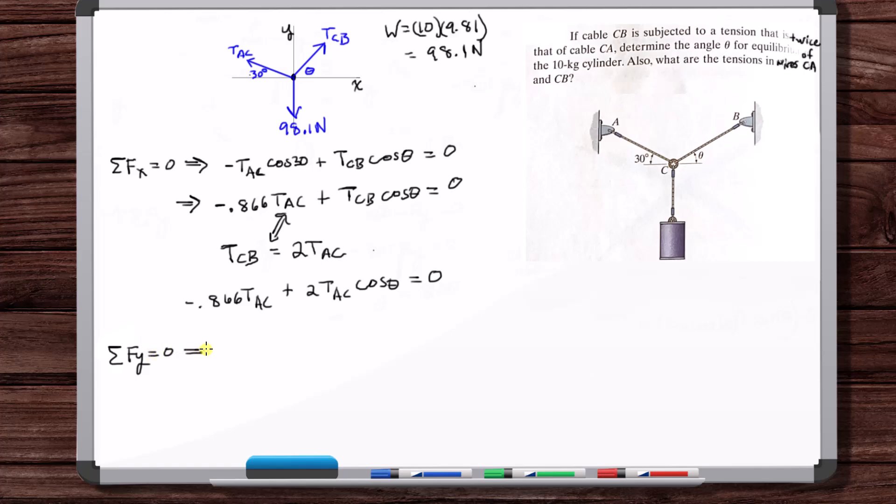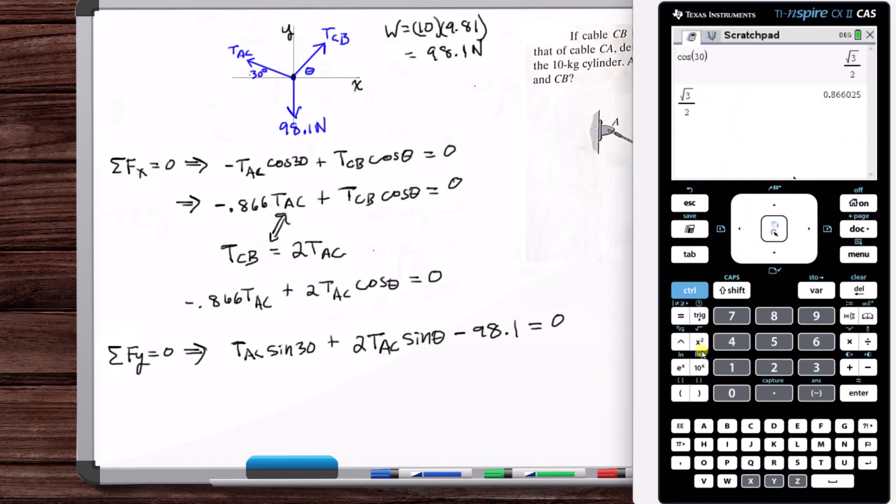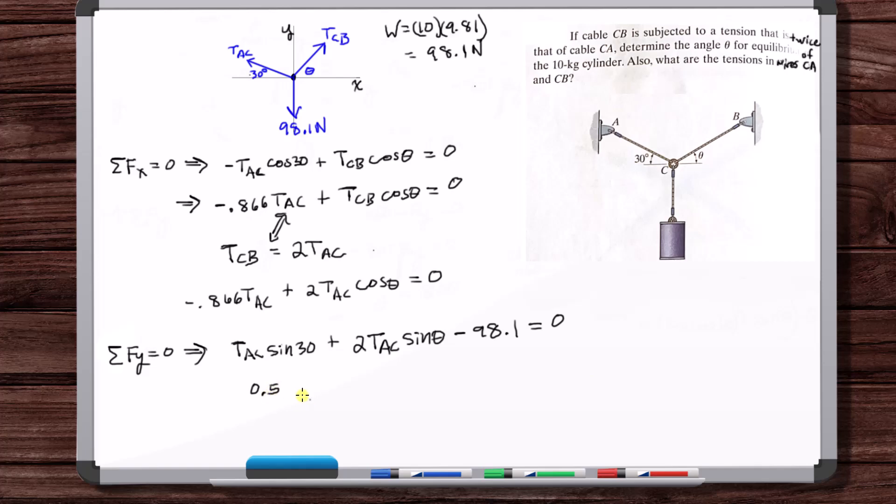Sum of forces in the y must equal zero. So T_AC sine 30 plus T_CB sine theta, but T_CB is 2 T_AC, so 2 T_AC sine theta minus 98.1 is equal to zero. Okay so sine of 30 is 0.5, so 0.5 T_AC plus 2 T_AC sine theta is equal to 98.1.